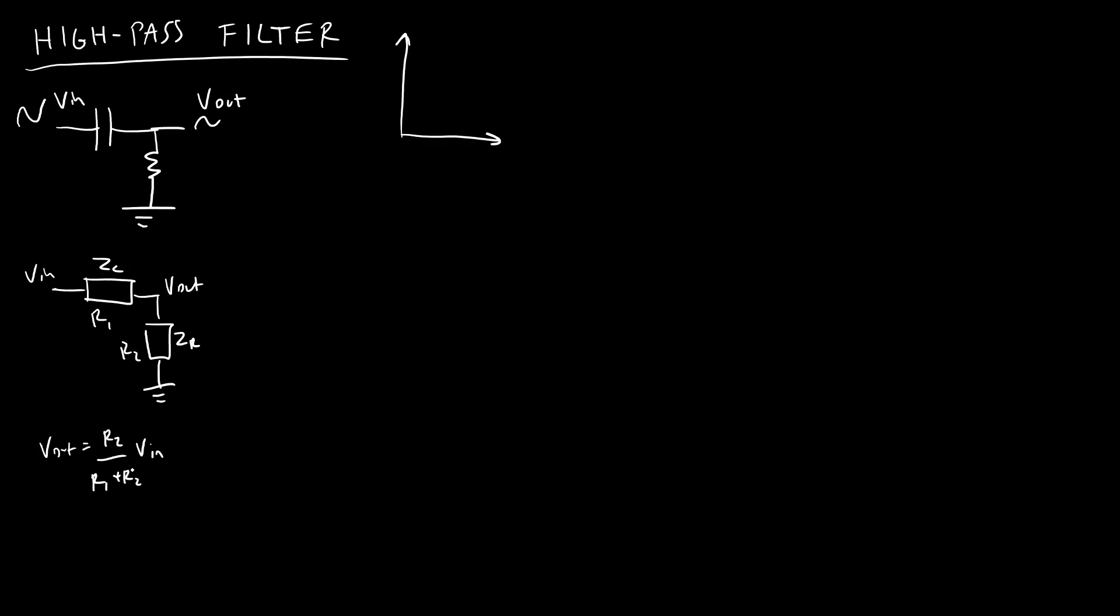But we know that if I have two impedances there, where these could be either inductors, capacitors, or resistors, not just resistors, I'm going to have Z2, or in this case ZR my resistor, over the impedance of my capacitor plus the impedance of my resistor times V_in. So that is the first shortcut I'm going to take to save myself time.